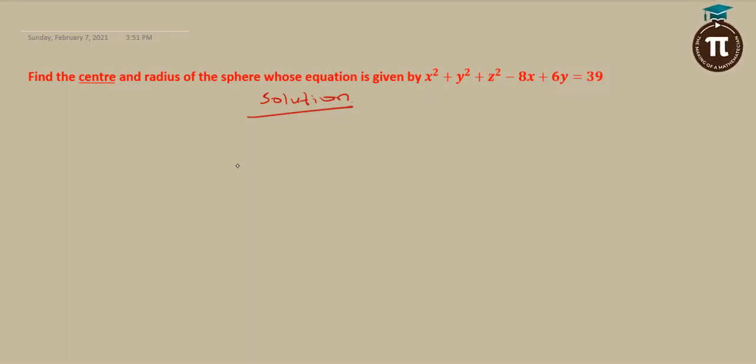The first thing you need to know in this question is the general formula or equation of a sphere. The general equation of a sphere is given as x minus a all squared plus y minus b all squared plus z minus c all squared equal to r squared, where a, b, and c is the center, and r is the radius.